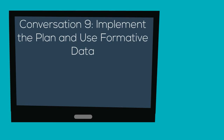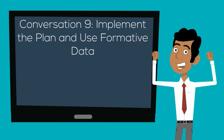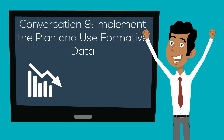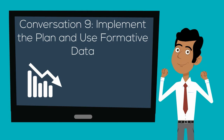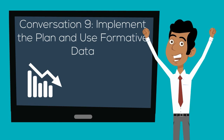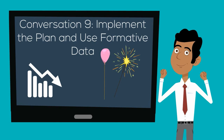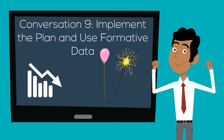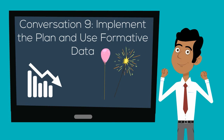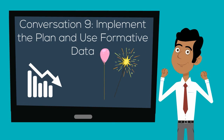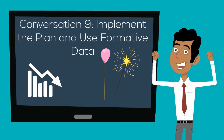Conversation 9 discusses how to implement that plan and use formative data or benchmarks to make adjustments as necessary. Don't forget to communicate and celebrate positive outcomes, as sharing and celebrating achievements helps to make them a lasting part of school culture.